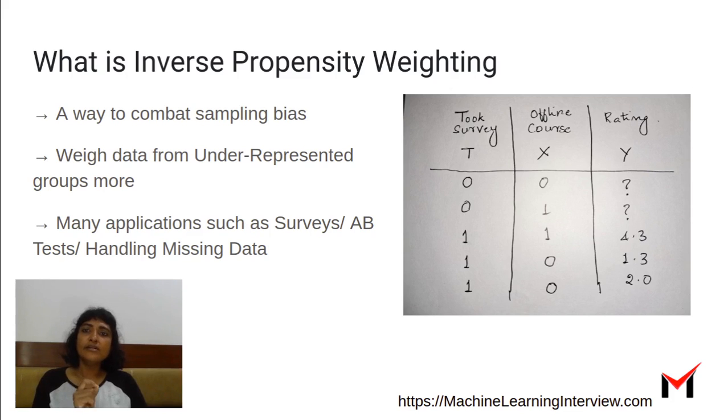But what we learned today, let us summarize, is inverse propensity weighing. It is a technique, IPW as it is called, to combat sampling bias when coming up with estimates. And the idea is to weigh data from underrepresented groups more. And it has many applications such as coming up with estimates for data collected from surveys or A-B testing or even handling missing data. Thank you.